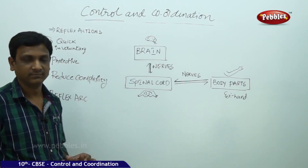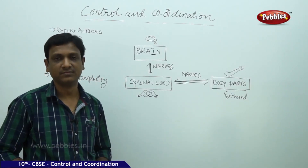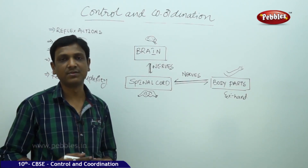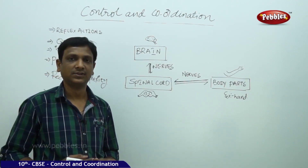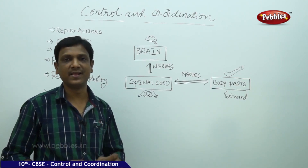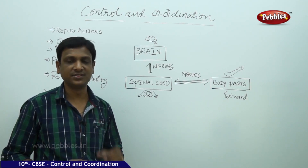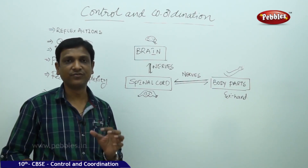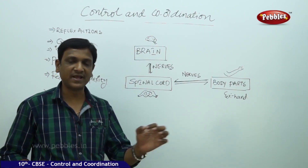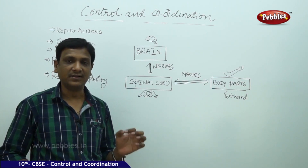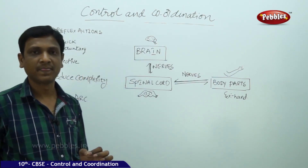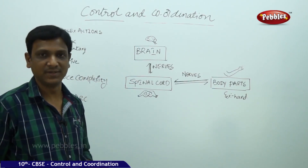In the previous class, we have seen how the information — that is the change in the environment — is noticed by the organism. Animals have a specialized tissue in their bodies called nervous tissue, which consists of nerve cells, by which information is received from the environment and carried to other parts of the nervous system, where analysis of the information takes place.